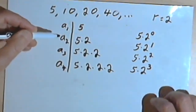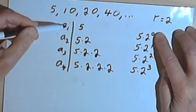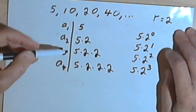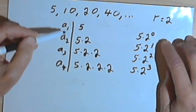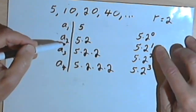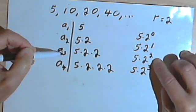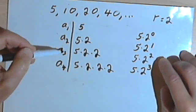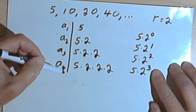And now if I look at this, I see there's a relationship between the number of the term and the exponent that I'm using. For term number 1, a sub 1, my exponent is 0. For term number 2, my exponent is 1. For term 3, a sub 3, the exponent is 2. So what I'm doing is I'm taking the number of the term, subtracting 1 from it,